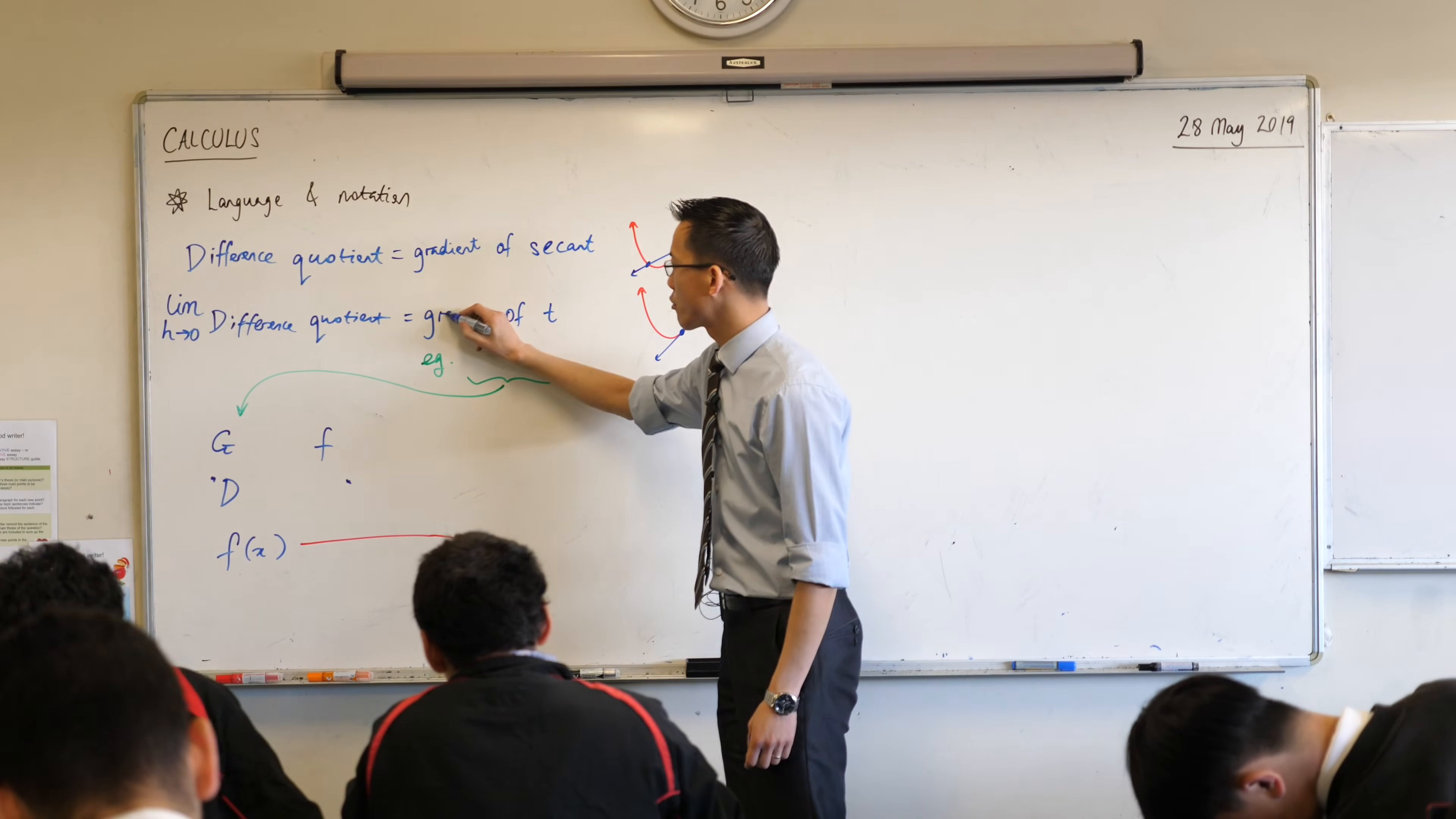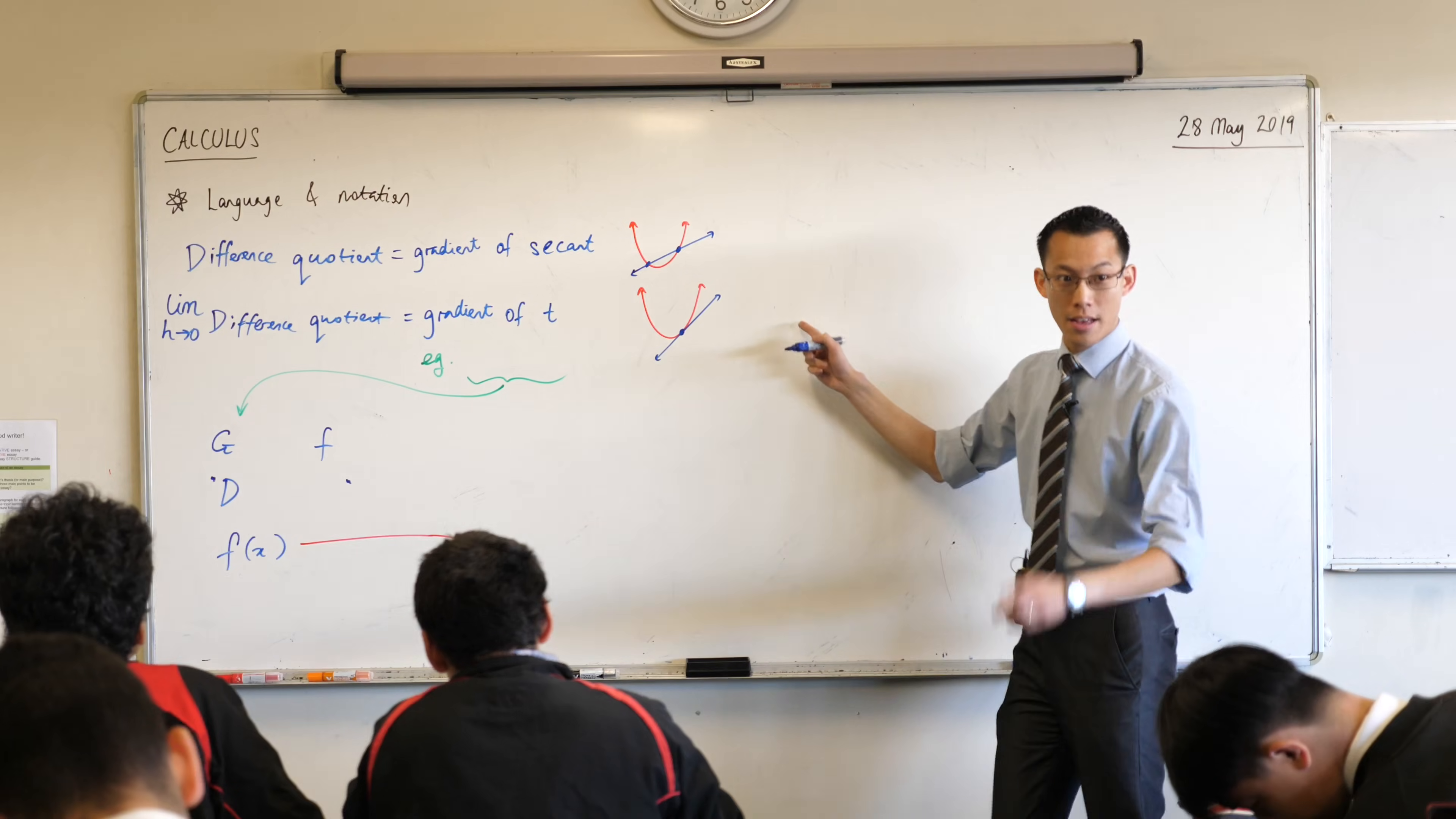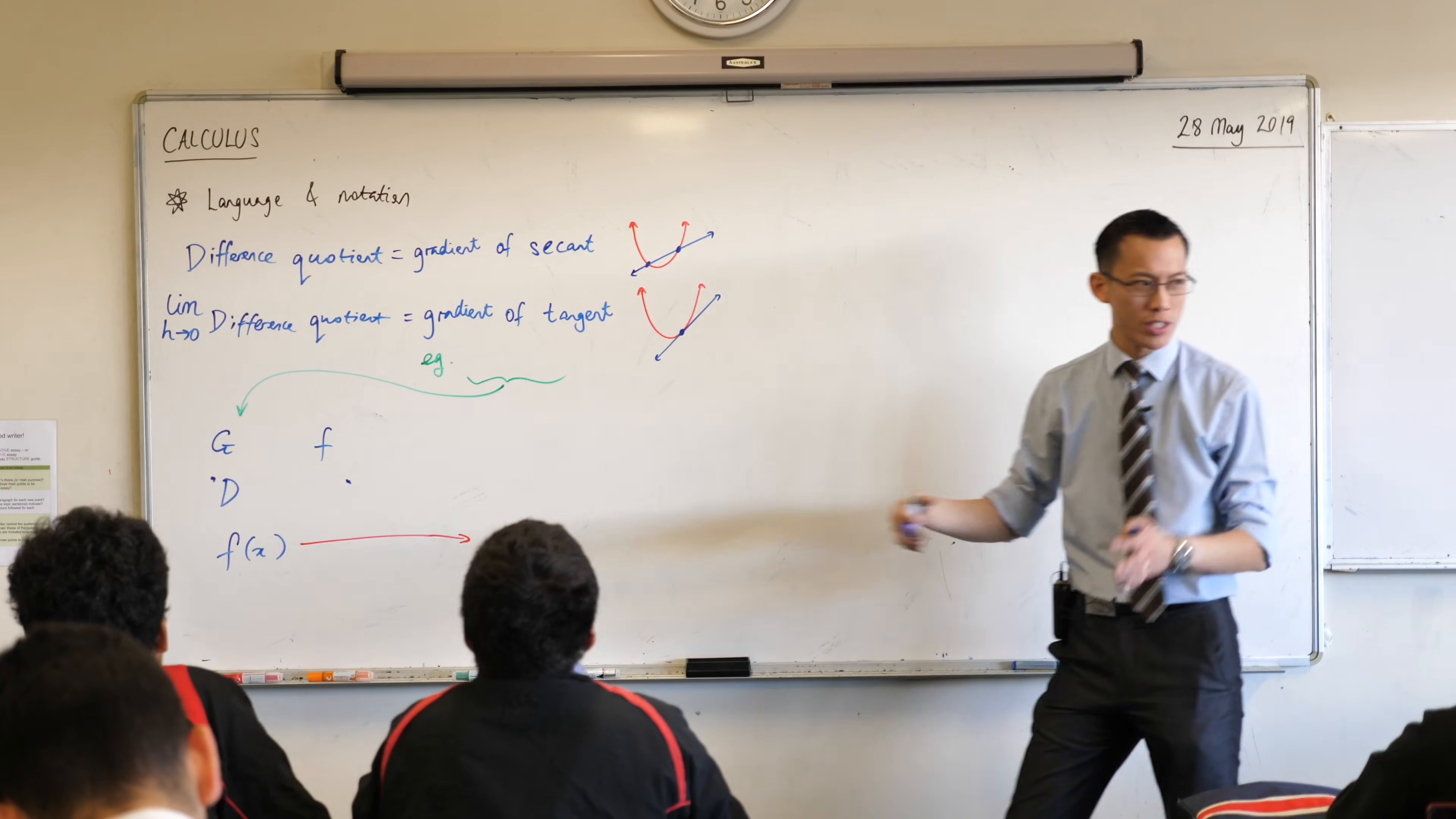We get a different gradient. We get the gradient of something else, namely the, starts with a T? The tangent. And why is it called a tangent again? What does tangent mean?